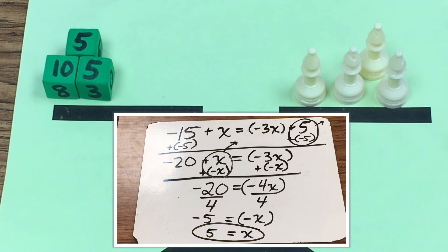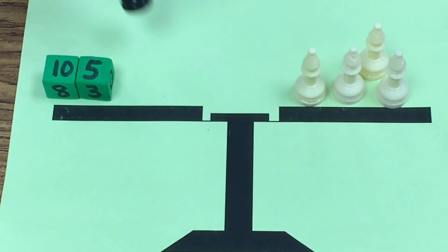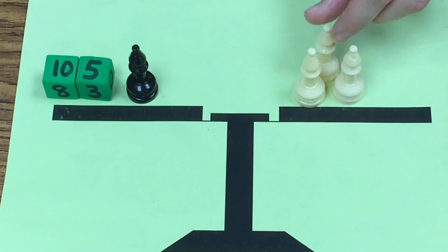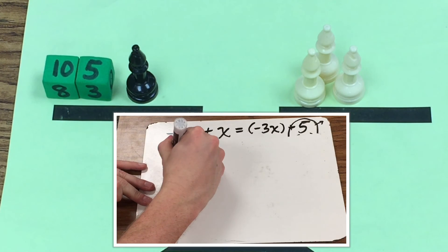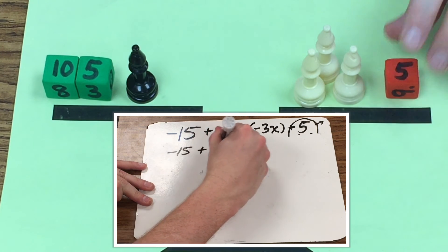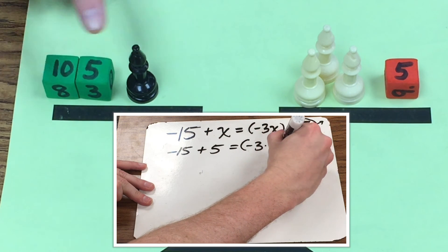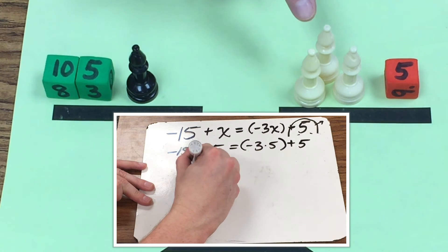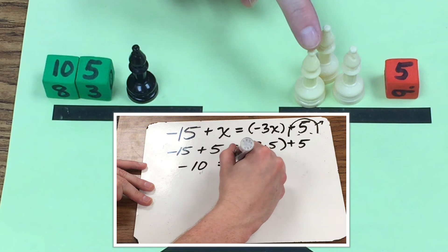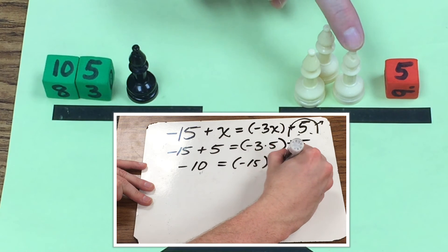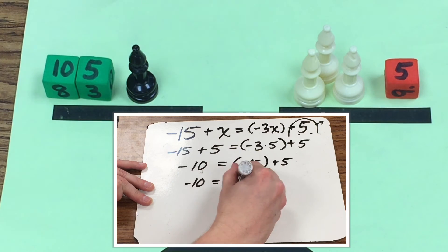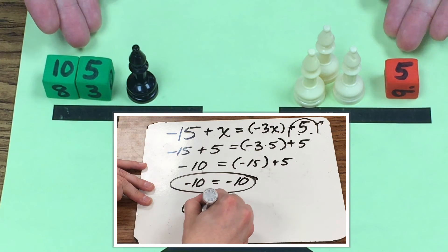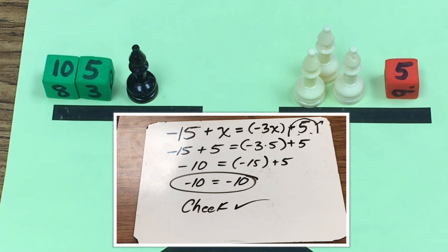Like always, we can check by setting the problem back up. Taking a little extra time to check your answer guarantees you have it right. X is positive 5, so: positive 5 plus negative 15 equals negative 10. Over here: negative 5, negative 10, negative 15, plus positive 5 equals negative 10. So negative 10 equals negative 10 — my answer checks out to be correct.